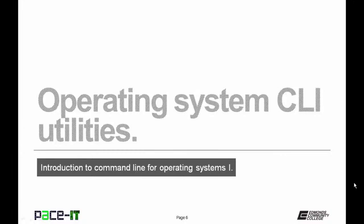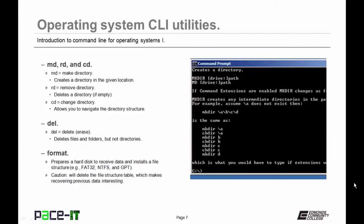Now let's talk about operating system command line utilities, starting with directories. The first command lines you should know are MD, RD, and CD. MD stands for make directory and creates a directory in a given location. RD stands for remove directory and deletes a directory if it is empty — no files or folders. CD is how you change directories — the navigational command.